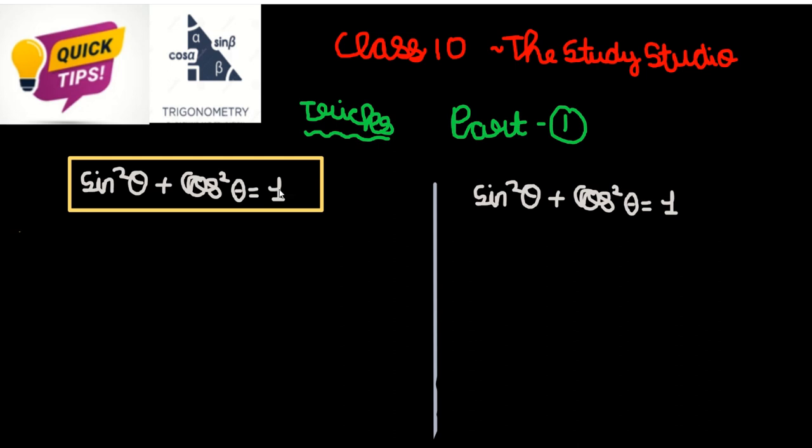Look, first this identity is written: sin square theta plus cos square theta is equal to 1. There is a line in the middle, after that the second one, that identity is written.